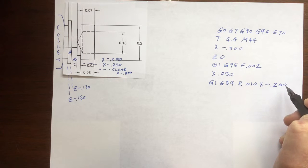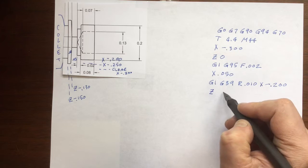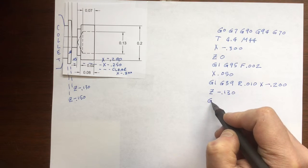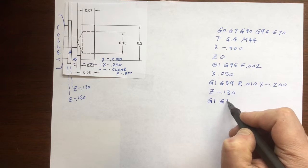So if you'd rather have a radius, change this G39 to a G36. We'll do the same for the stock diameter of 250.